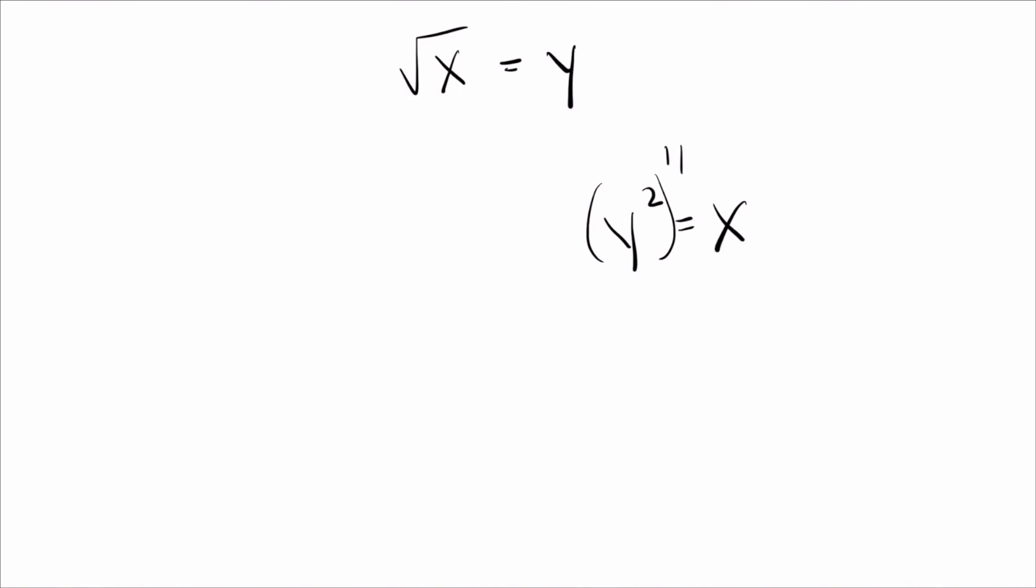Again, let's take each side and raise it to the one-half power. On the right, there's really not much to do. We'll follow exactly the same steps on the left-hand side. Power to a power means you multiply them. When you multiply them, you get y to the one, and that's just y.